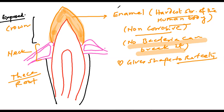Please remember: rooted teeth are called thecodont. If a tooth is non-thecodont, the root is absent. So if there is no root, the tooth will easily fall out — there is no doubt about that.